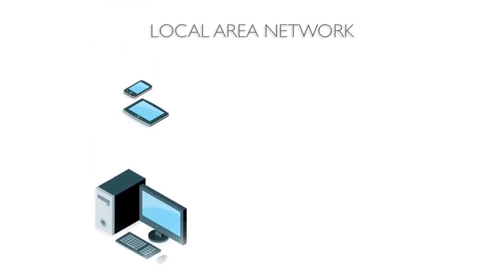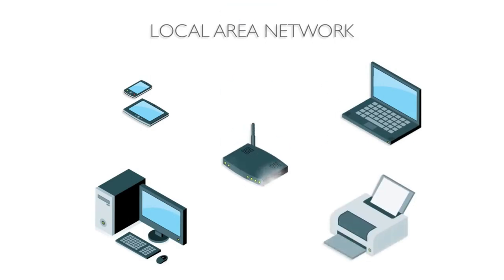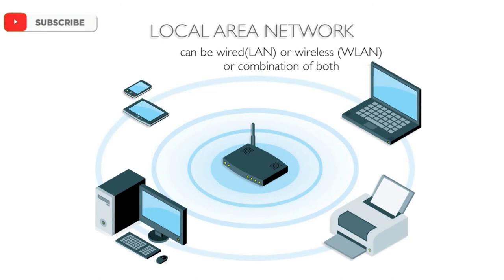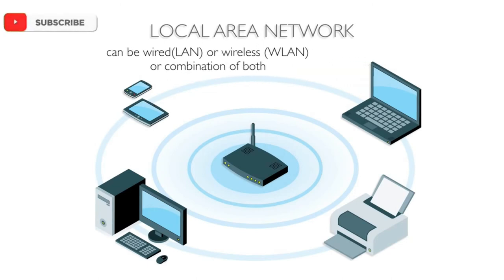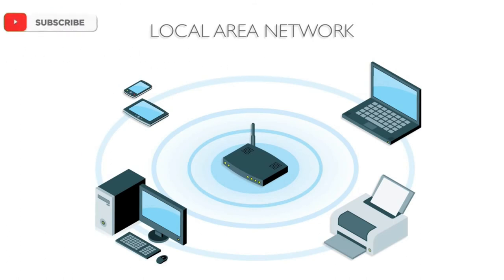Devices include desktop computers, laptops, printers, and a central switch or wireless router to allow for connectivity and data transfer. Typically LANs are arranged in a star topology around a central routing device, but networks can be wired or wireless. Transmission media includes fibre optics for high-end networks or network storage, but generally use Ethernet cable or 802.11x Wi-Fi.